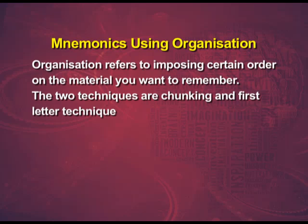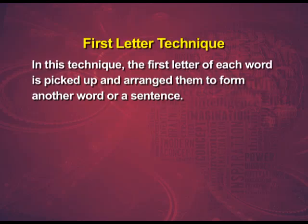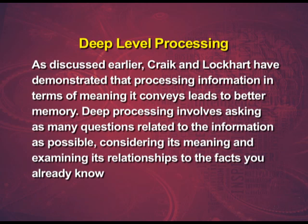Two further techniques are chunking and the first letter technique. In chunking, several smaller units are combined to form large chunks. For chunking, it is important to discover some organizational principles which can link smaller units. In the first letter technique, the first letter of each word is picked up and arranged to form another word or sentence. For example, colors of a rainbow are remembered as VIBGYOR. For deep level processing, Craik and Lockhart demonstrated that processing information in terms of the meaning it conveys leads to better memory. Deep processing involves asking as many questions related to the information as possible, considering its meaning and examining its relationships to facts you already know.